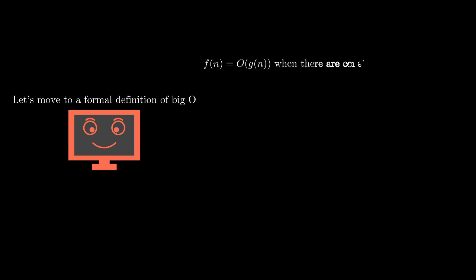Let's move on to looking at a formal definition of big O. f of n is equal to O of g of n when there are constants c greater than 0 and n₀ greater than 0, where f of n is less than or equal to c times g of n for all n greater than n₀. This is just a fancy way to say that f of n will grow no faster than g of n. As such, g of n is the upper bound for f of n, which is a time function.